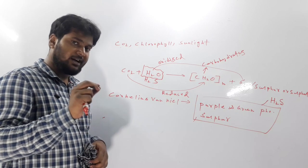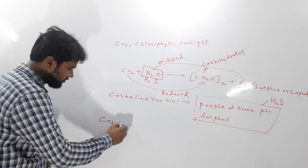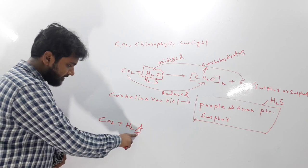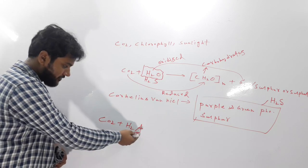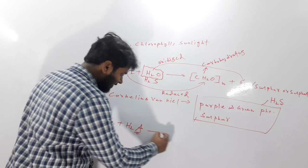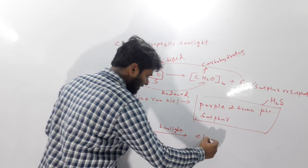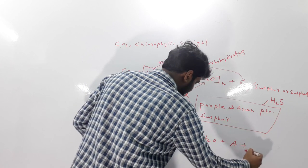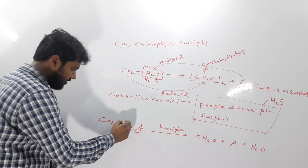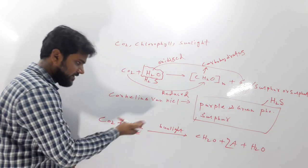The general equation of photosynthesis can be written as: CO2 + H2A → CH2O + A + H2O, where A is a variable — it may be oxygen in the case of water, or sulfur in the case of hydrogen sulfide. After balancing, this gives the exact generalized equation of photosynthesis.